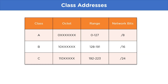Then we have Class B with a range of 128 to 191 with network bits as /16. And lastly we have Class C with a network range of 192 to 223 with network bits as /24. The network bits representing each class are very important when making subnets of a particular IP address.